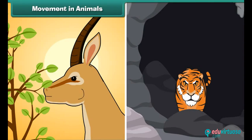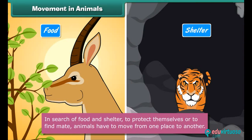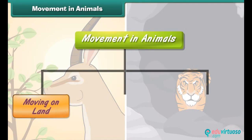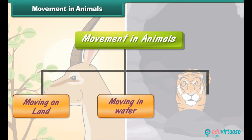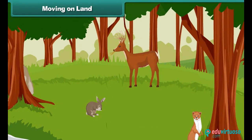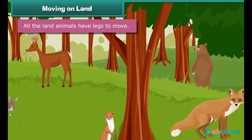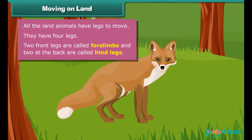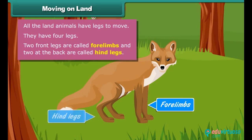Movement in animals: In search of food and shelter, to protect themselves, or to find a mate, animals have to move from one place to another. There are three different types of movement: moving on land, moving in water, and moving in air. All land animals have legs to move. They have four legs — two front legs are called forelimbs and two at the back are called hind legs.